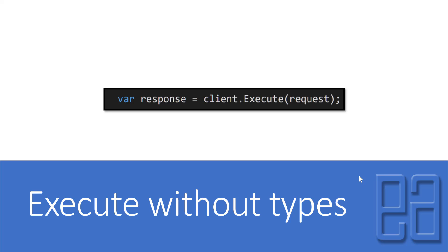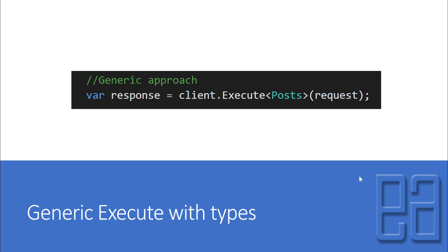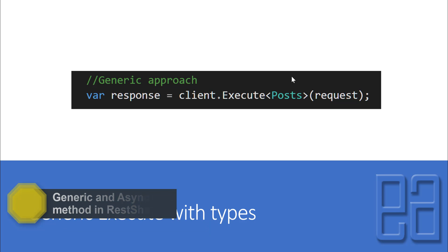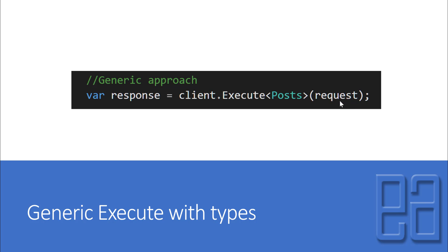So far in our video series we've been working with the execute method while executing POST and GET operation requests. We saw this execute method is used to get the response content, parse it, and see the output. This execute method can be extended further by using what is called a generic execute method, where you can pass the type. I'm going to perform a POST operation for the posts request. The post is a class we created before as a model and I've passed it as input for the execute method, so the response generated will be applied to that particular post class.